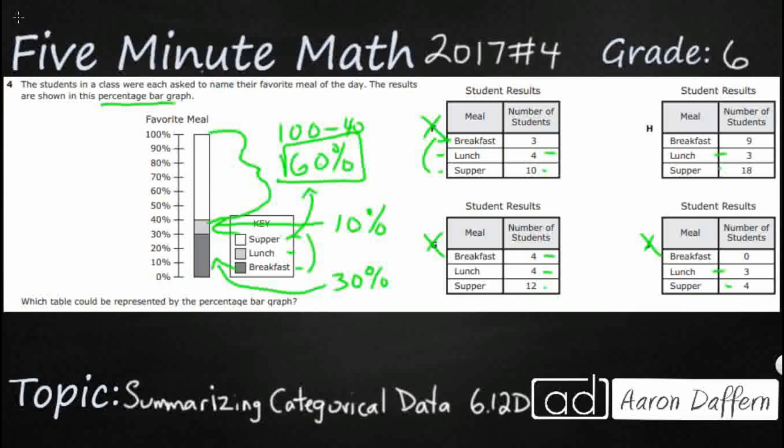How can we double check this? Well, this is how we make a percentage bar graph. First, let's take a look at H. We're going to take a look at our 9 and our 3 and our 18. Let's add them up to see what our total is. So that's going to be 12 and 18, so that's going to be 30.